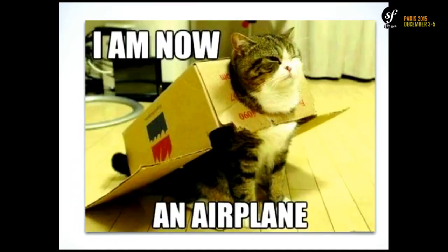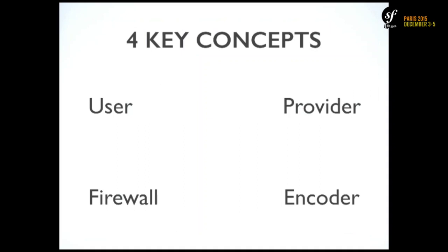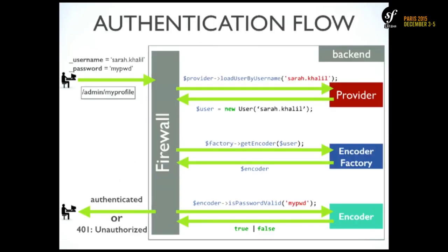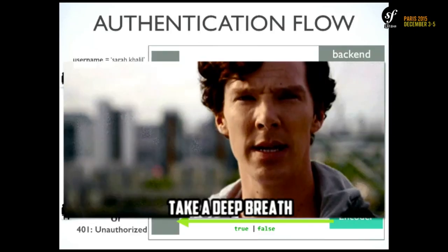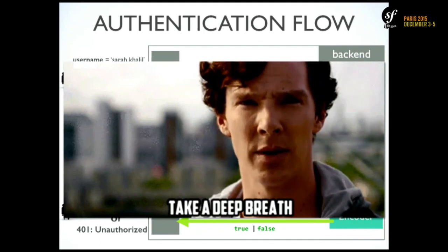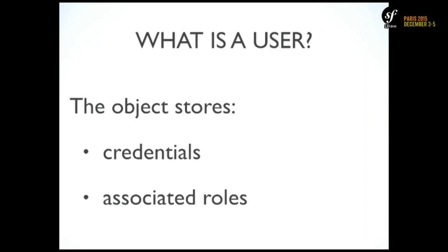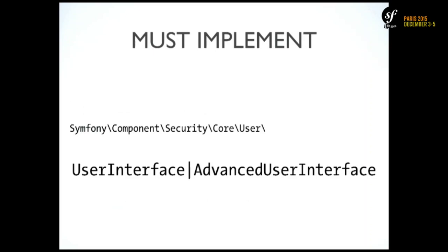Authentication is all about making sure that the user is who he claims to be. There are four key concepts and I'm going to talk about all of them: user, firewall, provider, then encoder. As a developer, as I told you, it's all configuration. This is what is happening in Symfony — take a deep breath, I'm going to explain everything slowly. A user has to hold credentials and roles, and it has to implement some interface: either UserInterface or AdvancedUserInterface.